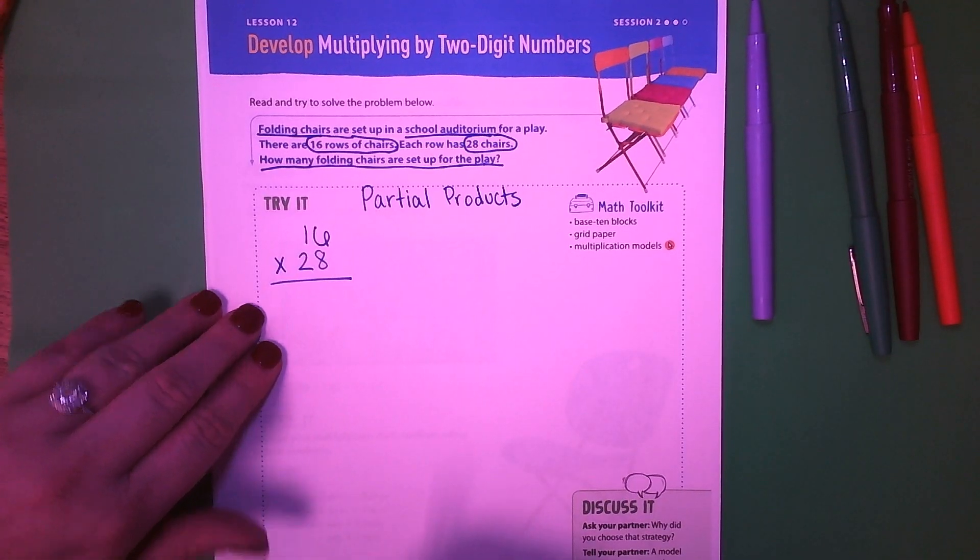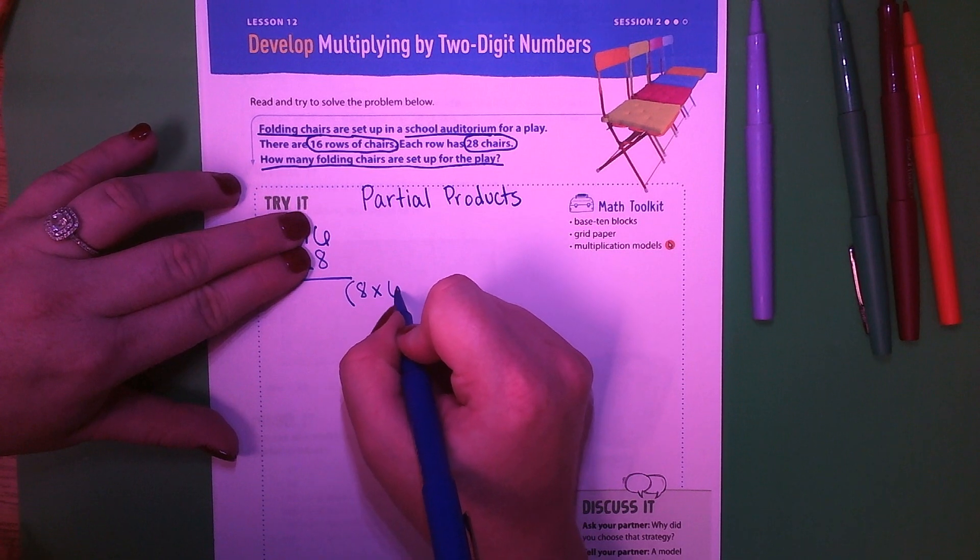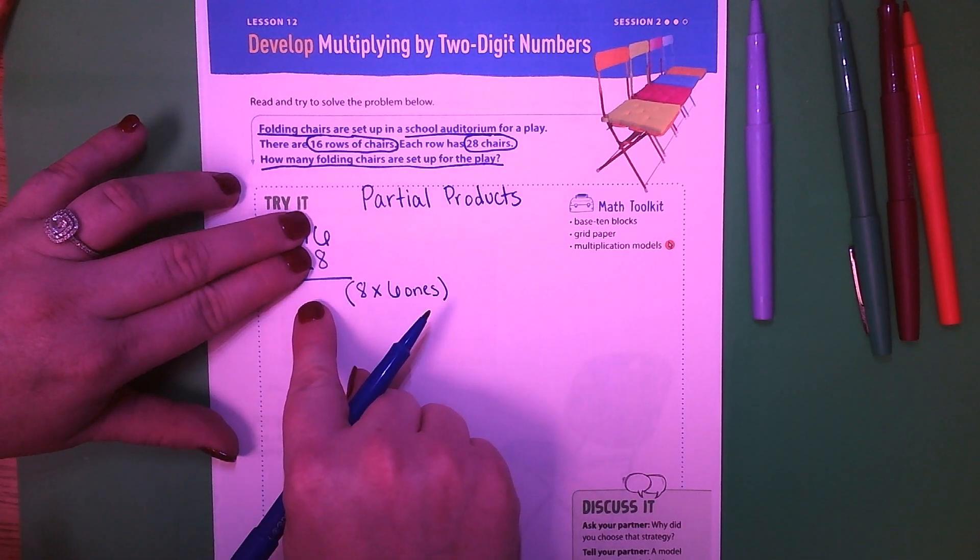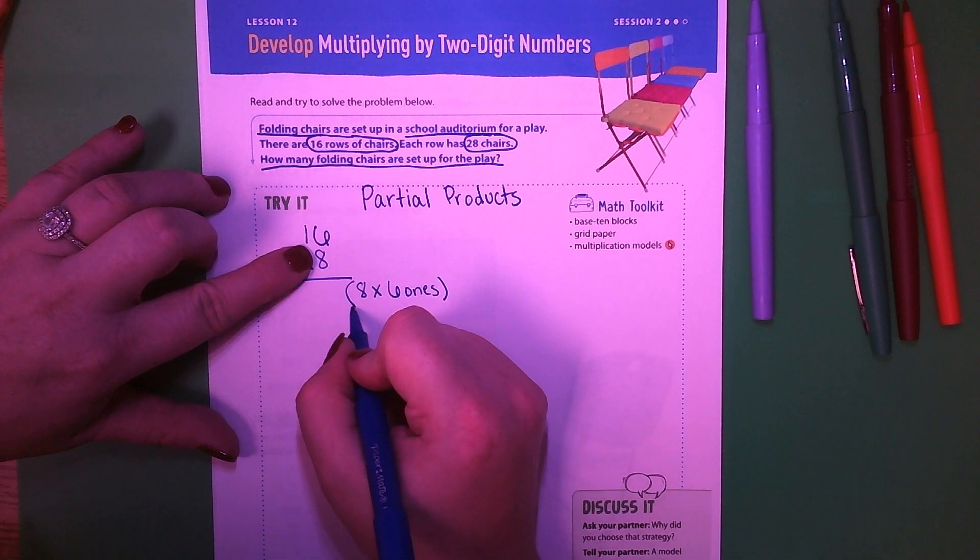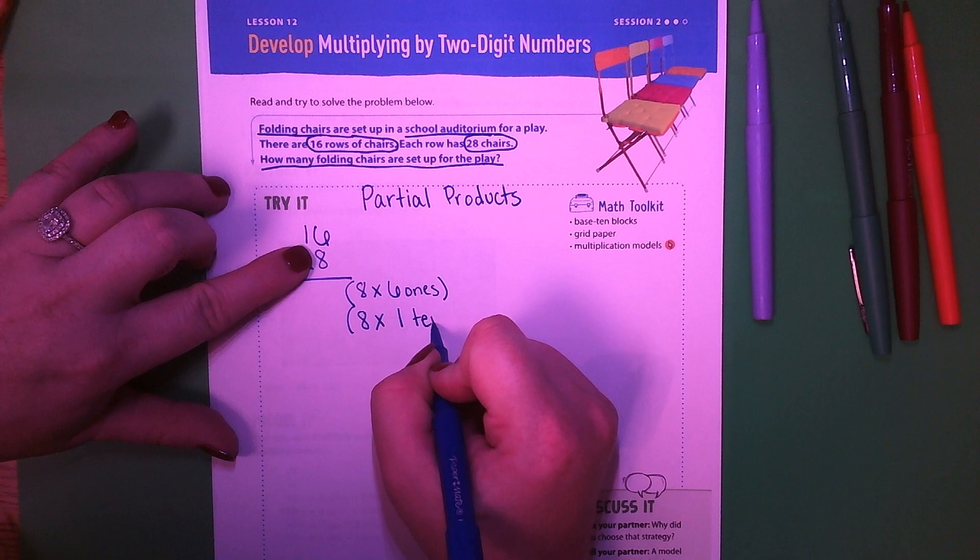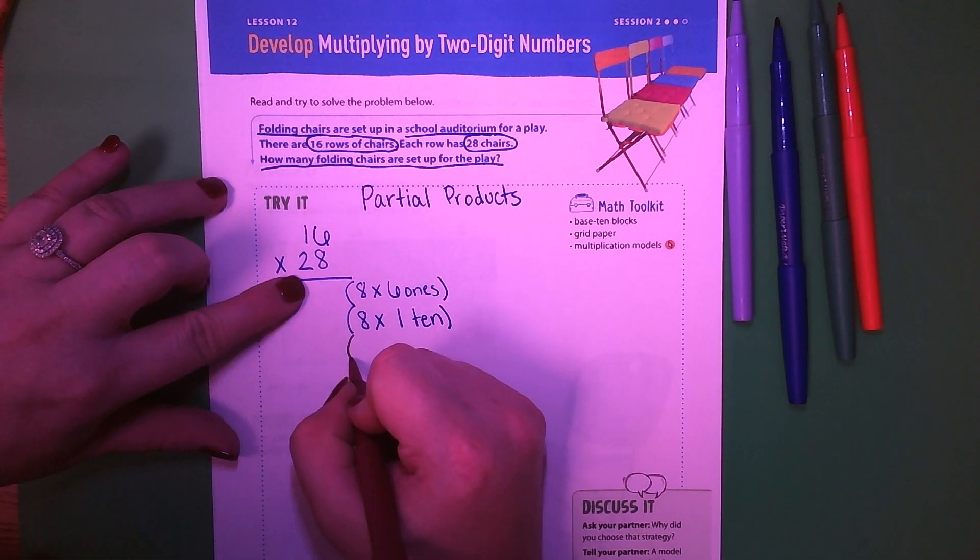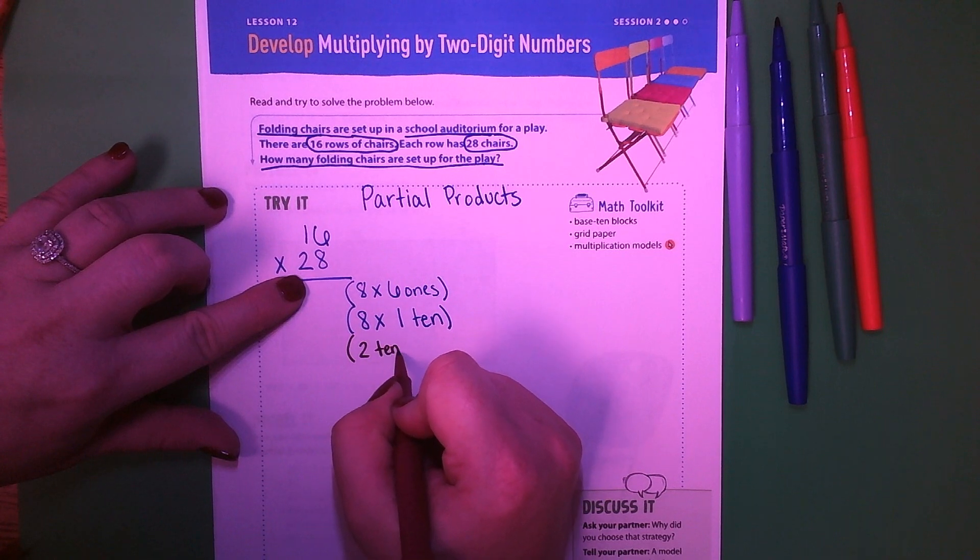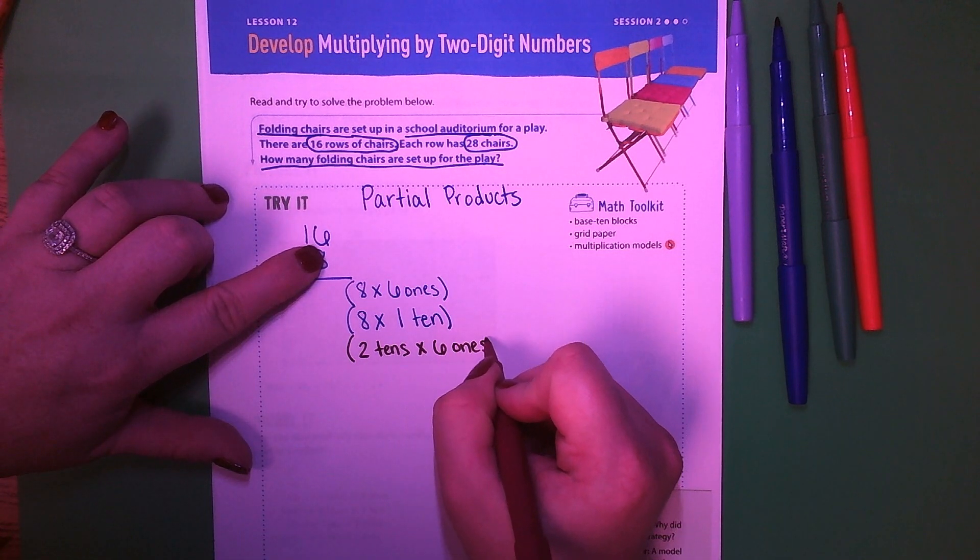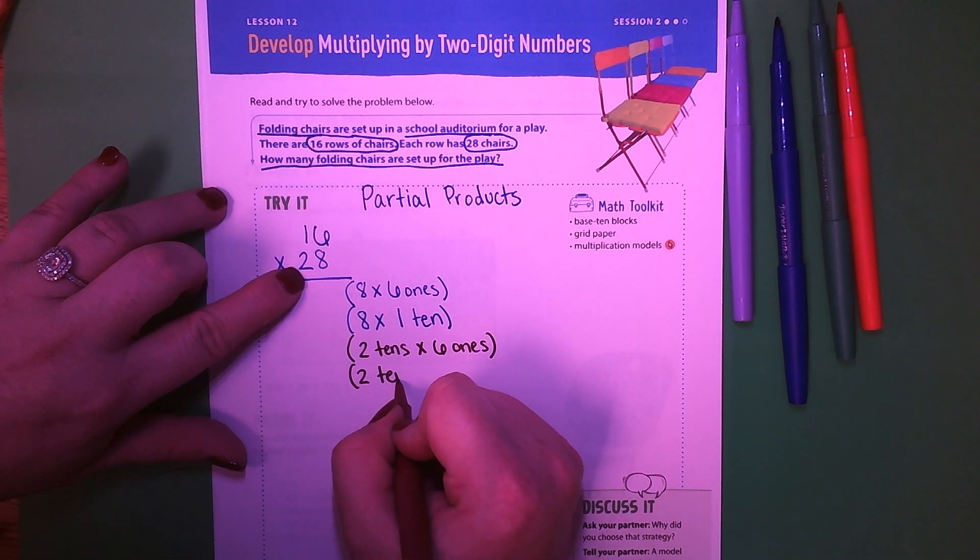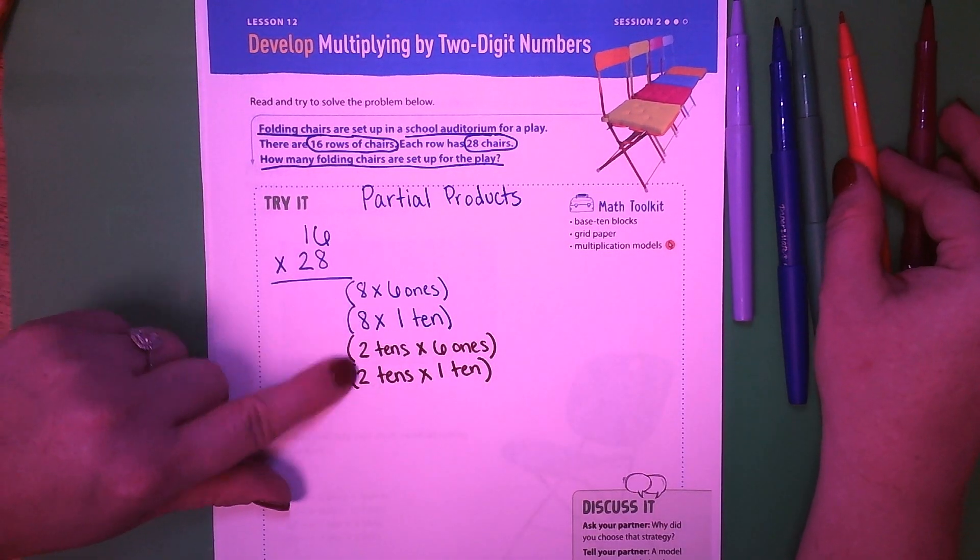So starting with partial products, I'm going to be doing 16 times 28. When I'm doing partial products, I'm first going to ignore this, and really I ignore that too in the beginning. So I'm doing 8 times 6 ones. I'm not going to write the answer yet just so we can practice this. Then I'm doing 8 times 1, but it's in the tens place. So 8 times 1 ten.